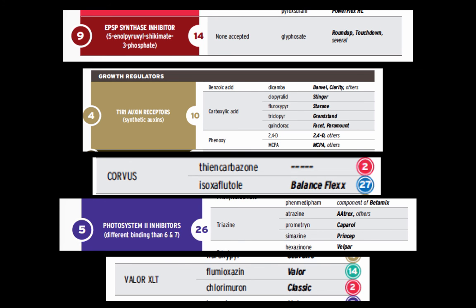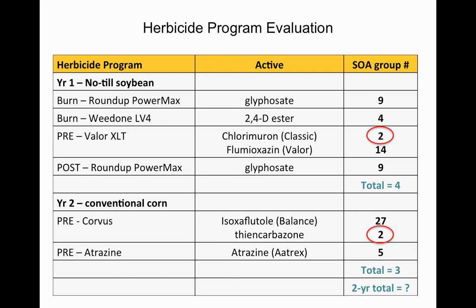Another example: if you have a diverse enough premix, you may not need post-emergence herbicides in corn — for instance, Corvus plus atrazine. Atrazine is Group 5; Corvus contains thiencarbazone (Group 2) and isoxaflutole/Balance Flexx (Group 27). We still have 4 sites of action in the beans and 3 in the corn. The interesting hitch here is that thiencarbazone and chlorimuron are both Group 2, but thiencarbazone is primarily a grass herbicide and chlorimuron is primarily a broadleaf. In theory you have 7 unique sites, but counting Group 2 only once gives a total of 6.